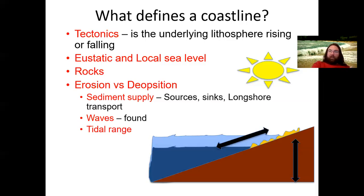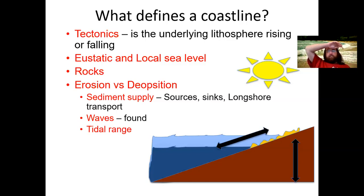We're going to learn that there are processes taking place on multiple timescales influencing our coastlines. Listed in order, we have tectonics — this controls whether your coastline is rising or falling, giving rates on the order of about one millimeter per year maximum. Tectonics operates on 500,000-year timescales and much longer.